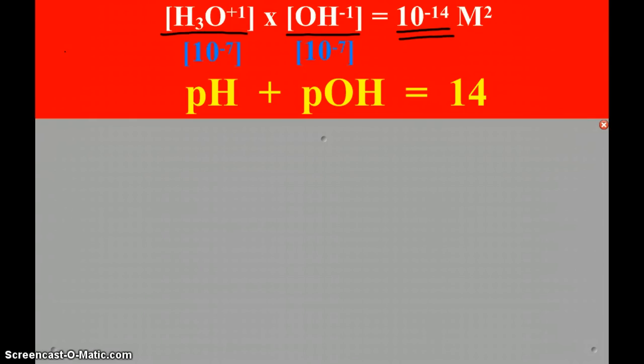In pure neutral water, that means the concentration of hydronium and the concentration of hydroxide are the same. They would both be 10 to the negative 7, and so that's how we end up with the 10 to the negative 14 when you multiply them together.